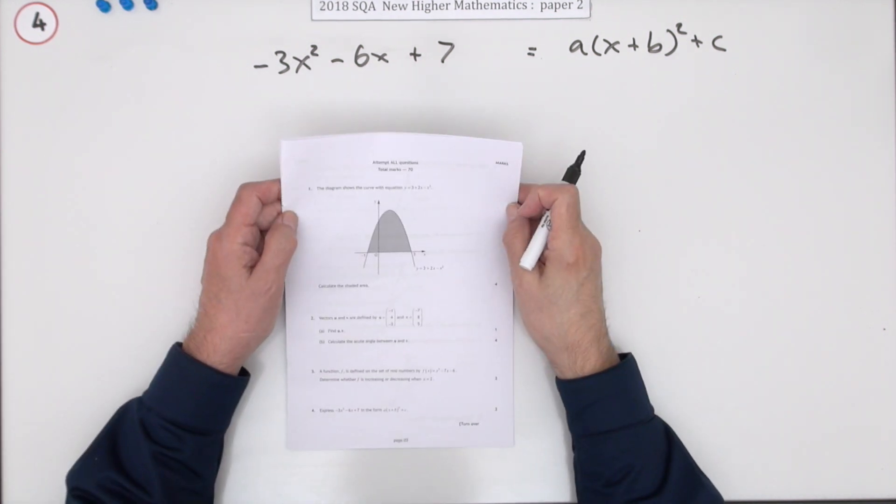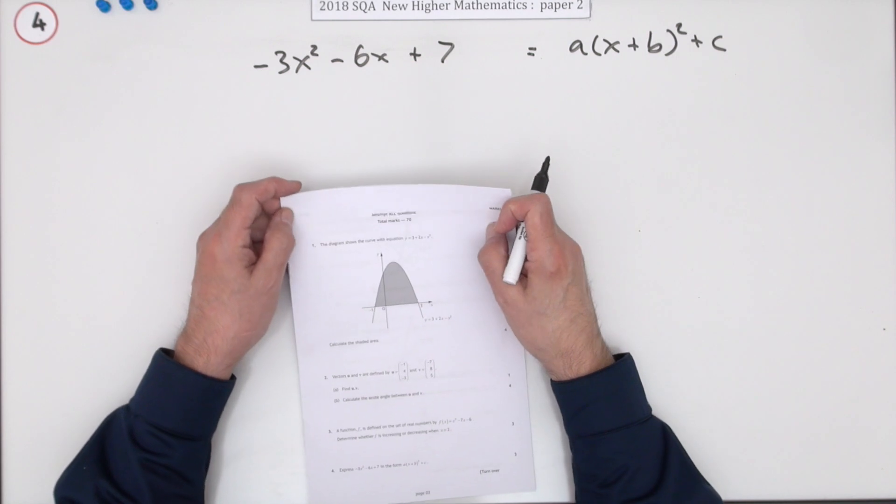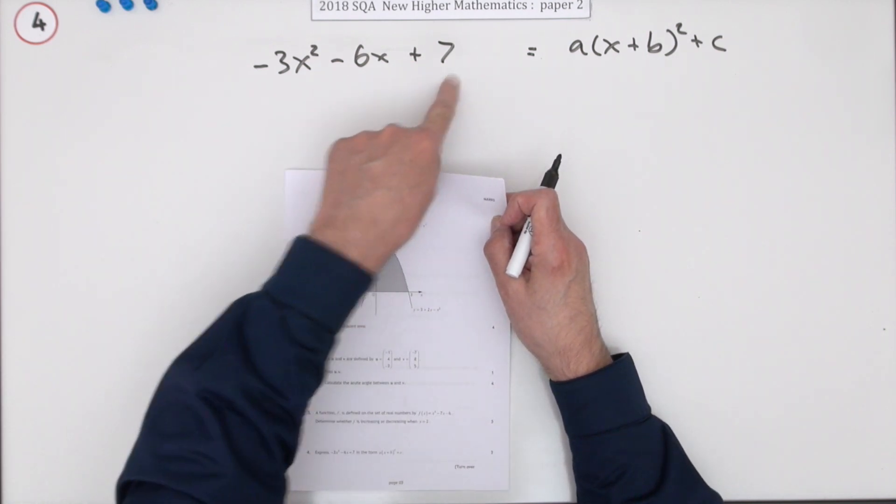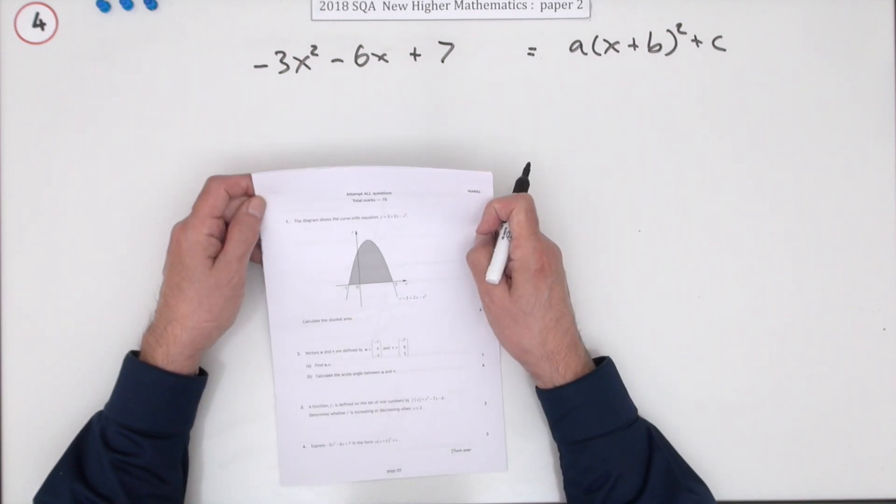Number 4 from the 2018 SQA Higher Maths Paper 2, 3 mark question for completing the square. It simply says, express this in this completed squared form for 3 marks.